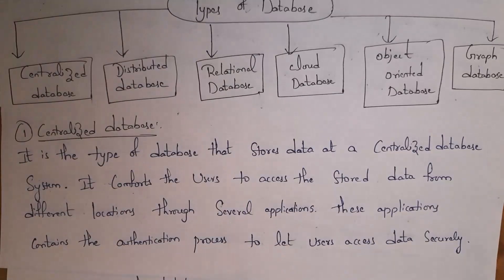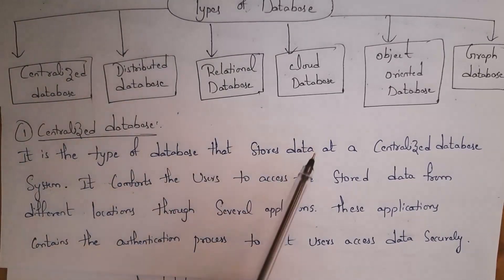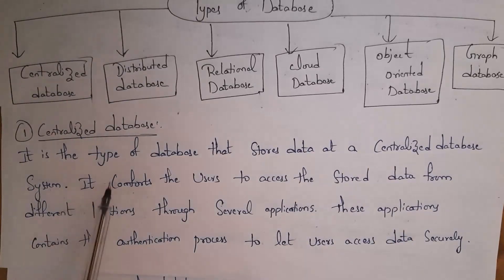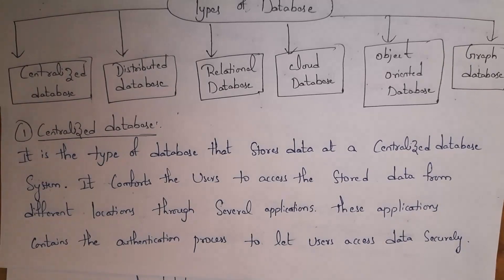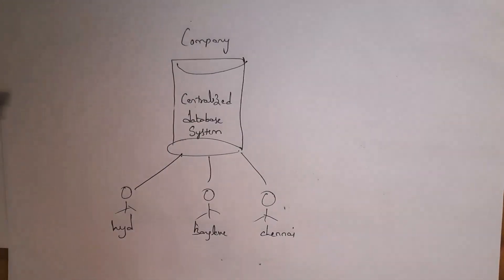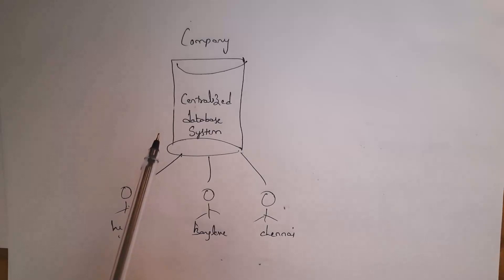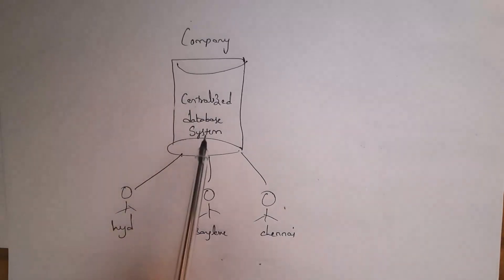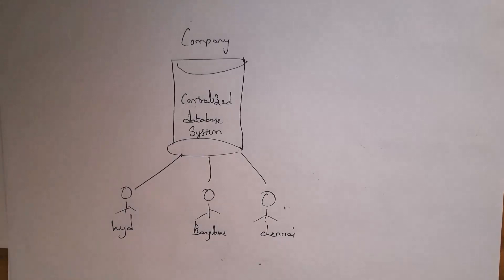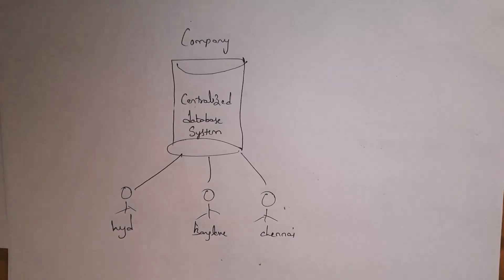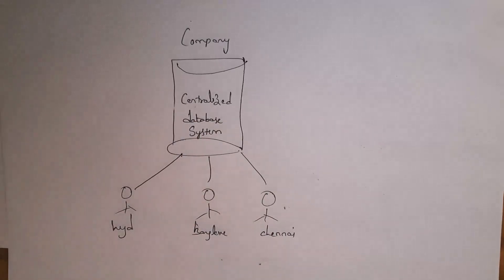A centralized database is the type of database that stores data at a centralized database system. It allows users to access the stored data from different locations through several applications. For example, a software company has a centralized database system. Three employees — one from Hyderabad, one from Bangalore, one from Chennai — can all access data from this centralized database system using various applications.